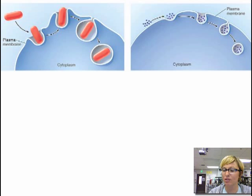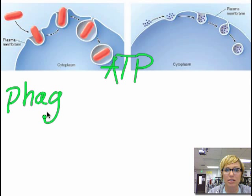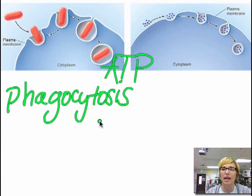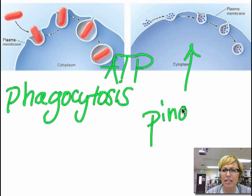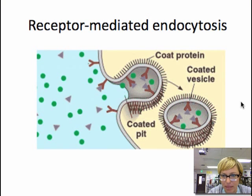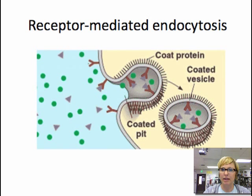Another type of active transport that uses ATP is phagocytosis, which moves large molecules into and out of the cell by folding the membrane, and also pinocytosis, which is the same thing except moving much smaller molecules. There's one more type of membrane transport I'd like to talk about, and that is receptor-mediated endocytosis — it seems like a long, crazy word but it's pretty easy to understand.